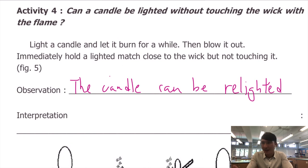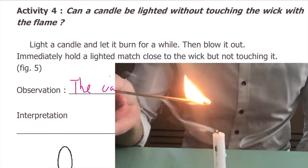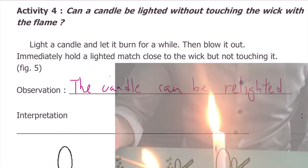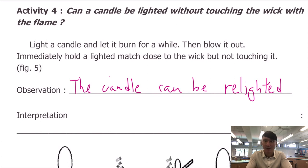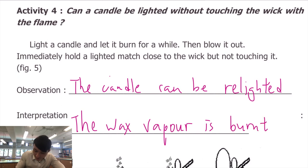If you take a closer look at the candle that has just been extinguished, as we put the flame close to the wick, it is the lingering wax vapor that first catches fire. Then the flame propagates and moves back to the wick, relighting the candle. So what we can tell is that the thing actually burning in a candle is not the liquid wax, not the solid wax — it should be wax vapor. It is the wax vapor that keeps burning so the candle can sustain its flame. The interpretation is: the wax vapor is ignited by the match.